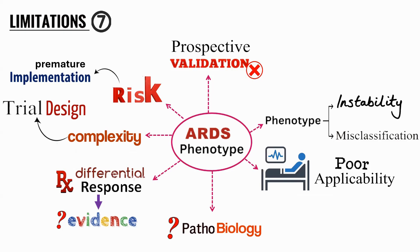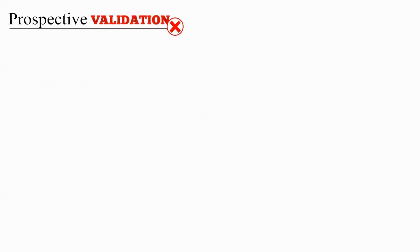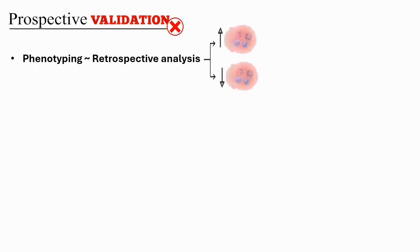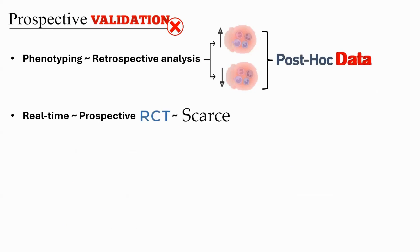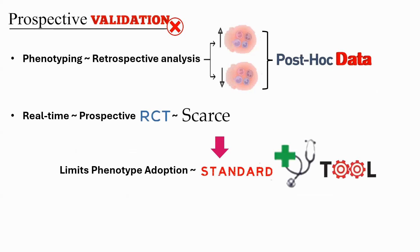So premature implementation can lead to detrimental outcomes. These are seven limitations of phenotyping of ARDS. All phenotyping — hyperinflammatory and hypoinflammatory — has come from retrospective post-hoc data. Real-time prospective randomized controlled trials are very scarce, and because there are no RCTs to identify phenotypes, adopting this as a standard clinical tool remains superfluous at this point in time.